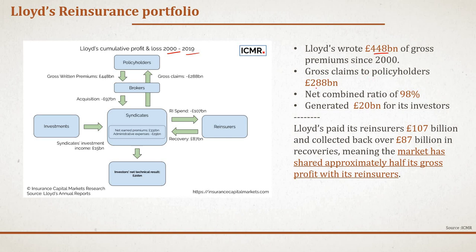Gross claims to policyholders were about 288 billion pounds, the net combined ratio was around 98, and Lloyd's generated 20 billion pounds for its investors. Lloyd's paid its reinsurers 107 billion pounds and collected back approximately 87 billion pounds in recoveries, meaning the market shared approximately half of its gross profit with reinsurers. Net earned premium was around 332 billion pounds, with 107 billion ceded and 87 billion recovered — the transactions LORS manages are enormous.